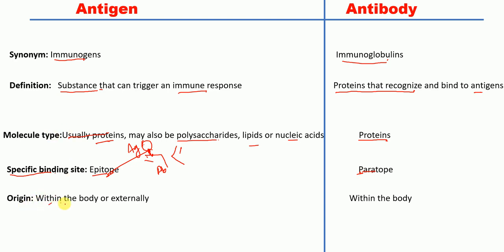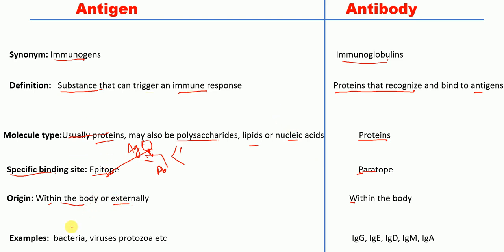The next difference is origin. Antigens come from within the body or from external sources, whereas antibodies are produced inside the body by B cells. Examples of antigens include bacteria, viruses, and protozoa. The types of antibodies are IgG, IgD, IgM, IgA, and IgE — where 'Ig' refers to immunoglobulin. I hope this video was helpful, thank you.